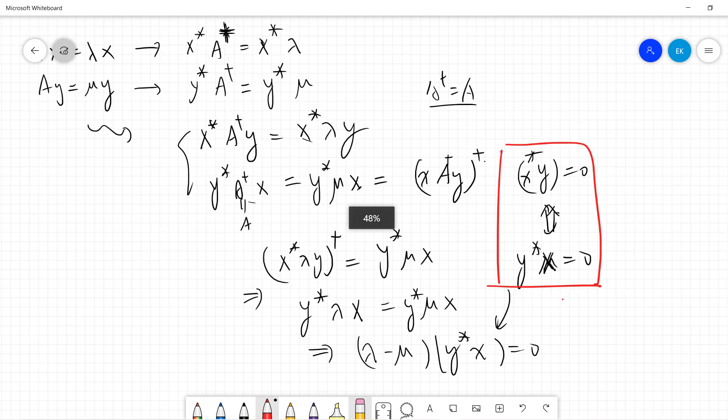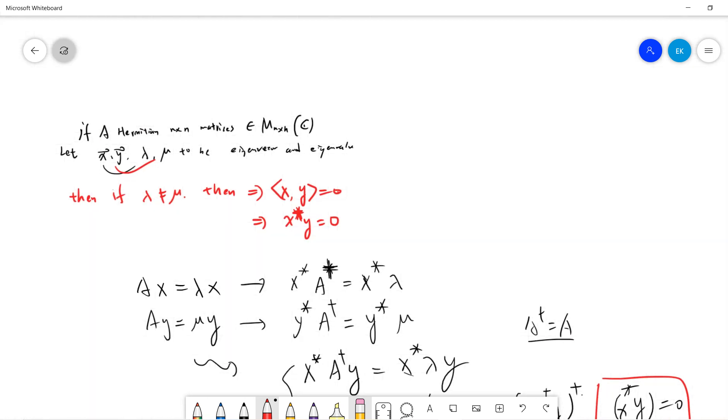That's it. So we proved that if eigenvalues are not the same, then eigenvectors must be orthogonal.